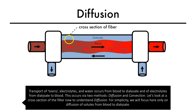Transport of toxins, electrolytes, and water occurs from blood to dialysate, and electrolytes from dialysate to blood. This occurs via two methods: diffusion and convection.